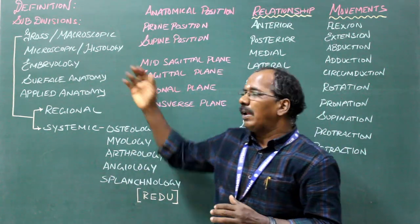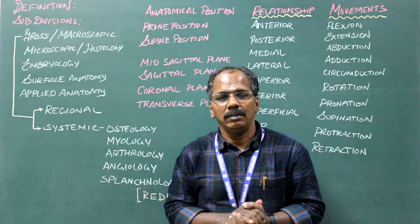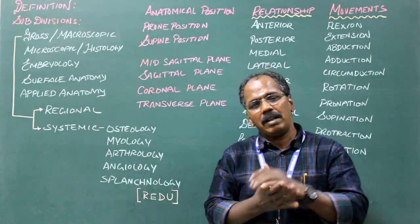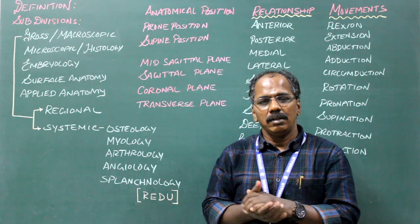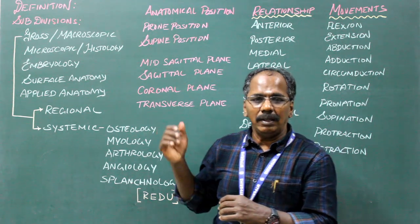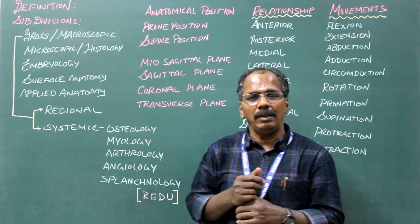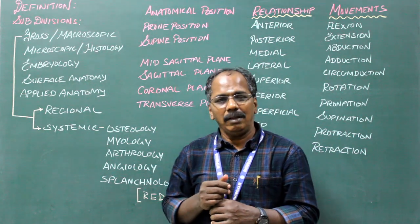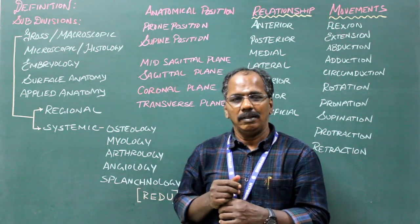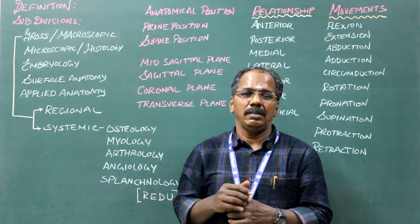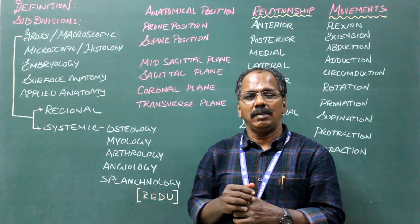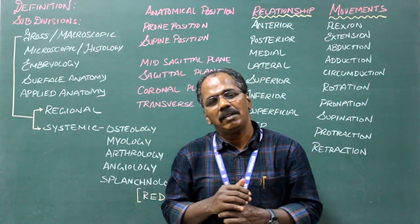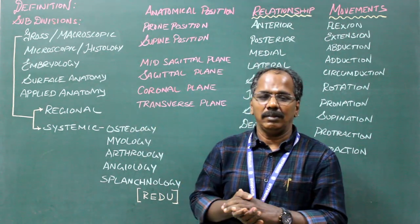Subdivisions of anatomy. The major subdivisions of anatomy are gross anatomy or macroscopic anatomy, microscopic anatomy, embryology, surface anatomy, and applied anatomy.